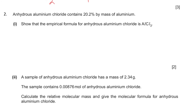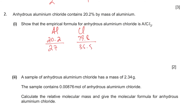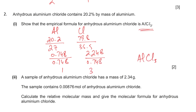Anhydrous aluminium chloride (without water of crystallisation) contains 20.2% aluminium by mass, so 79.8% is chlorine. Dividing 20.2 by 27 gives 0.748, and 79.8 by 35.5 gives 2.248. Dividing by the smaller gives a mole ratio of 1:3, confirming the empirical formula AlCl3.